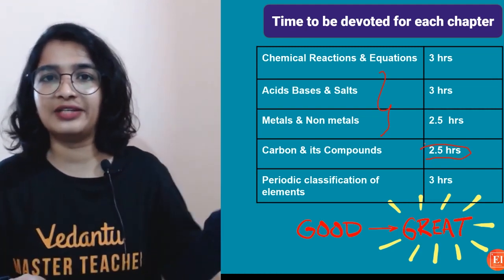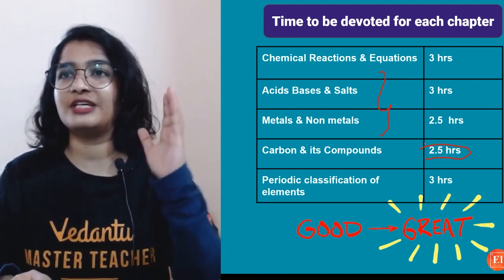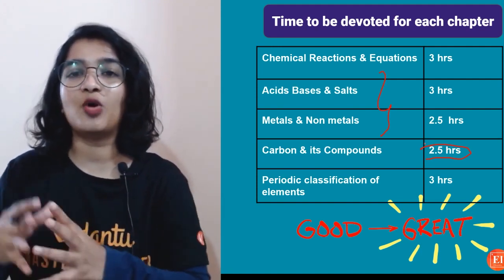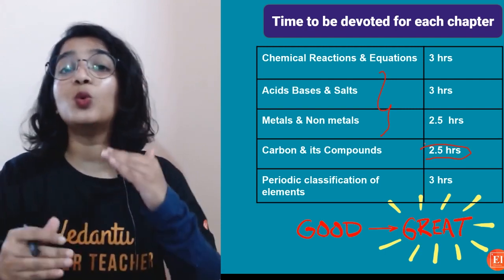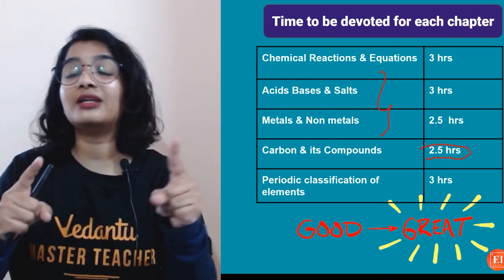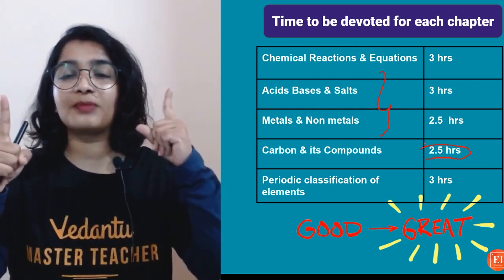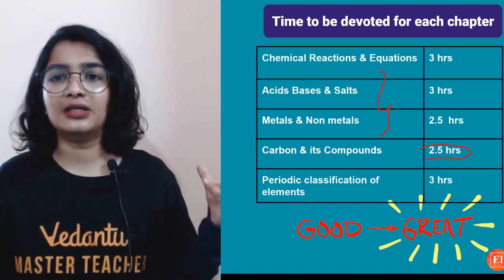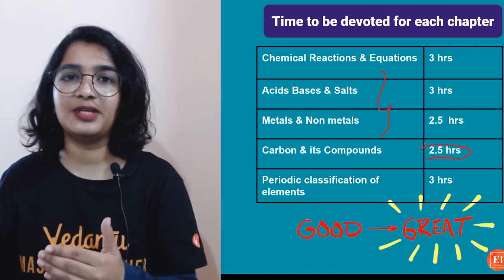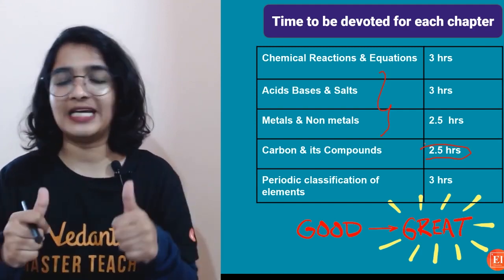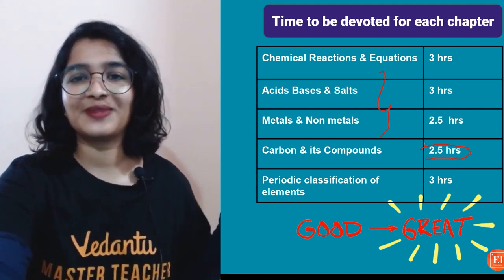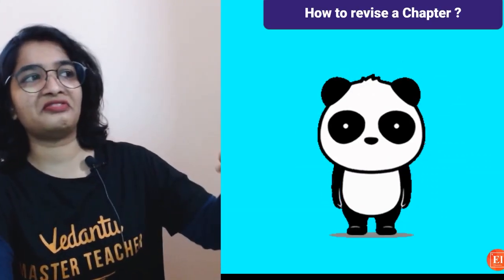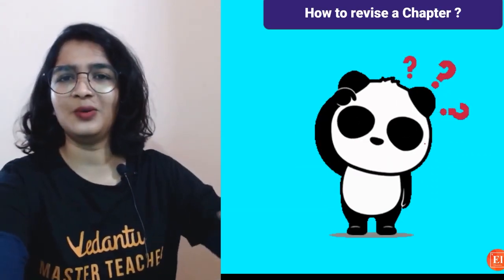For Periodic Classification of Elements, focus on the limitations of Döbereiner's Triads, Newlands' Law of Octaves, Mendeleev's Periodic Table, and the salient features of the Modern Periodic Table. Know who gave which law — do not confuse Mendeleev's law with the Modern Periodic Law. Understand how properties vary across a period and down a group. That's all you need.